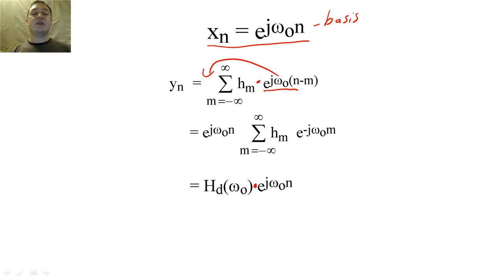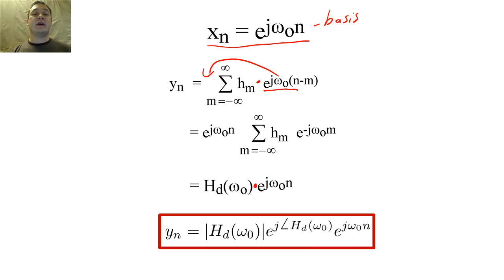We can alternatively write y[n] to show that it will equal x[n] scaled by the magnitude of the frequency response of the filter evaluated at ω₀.